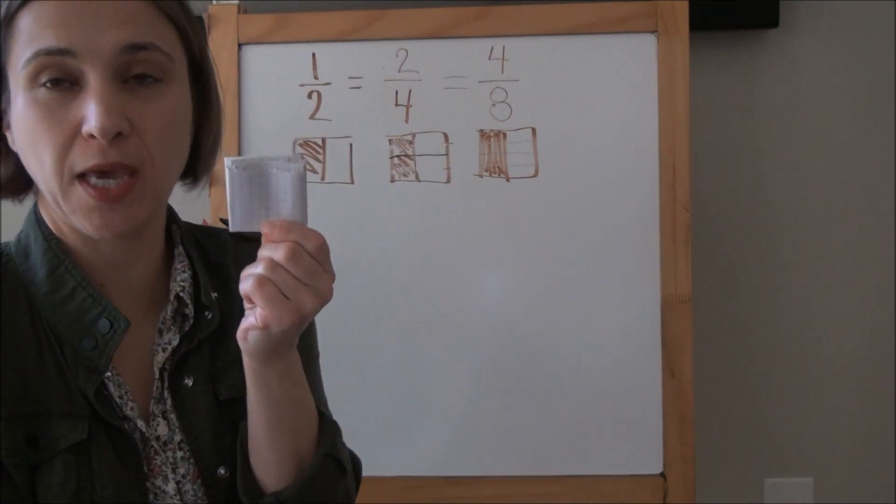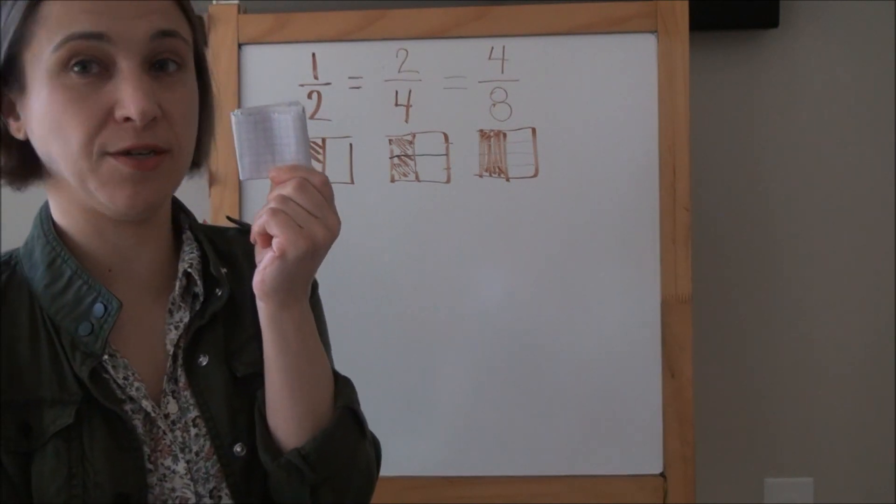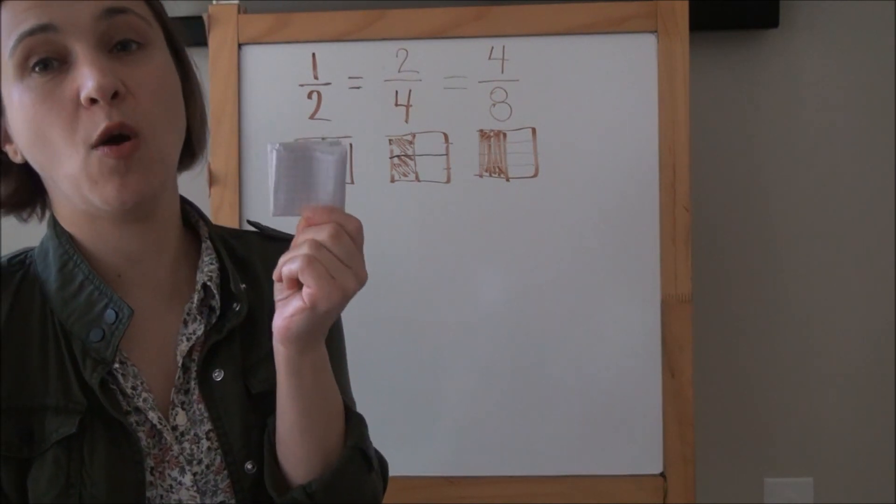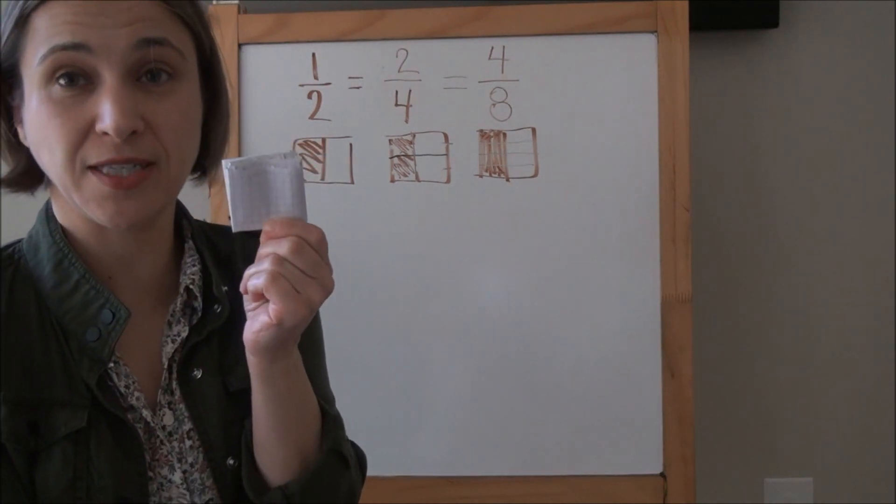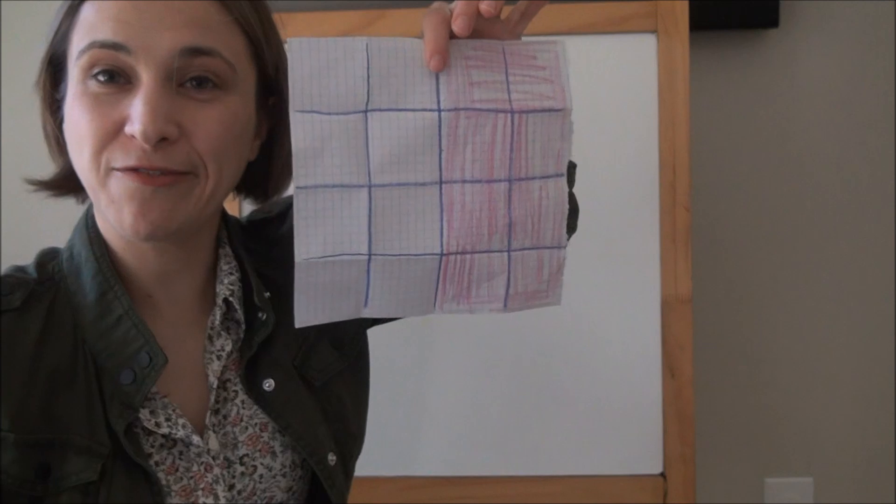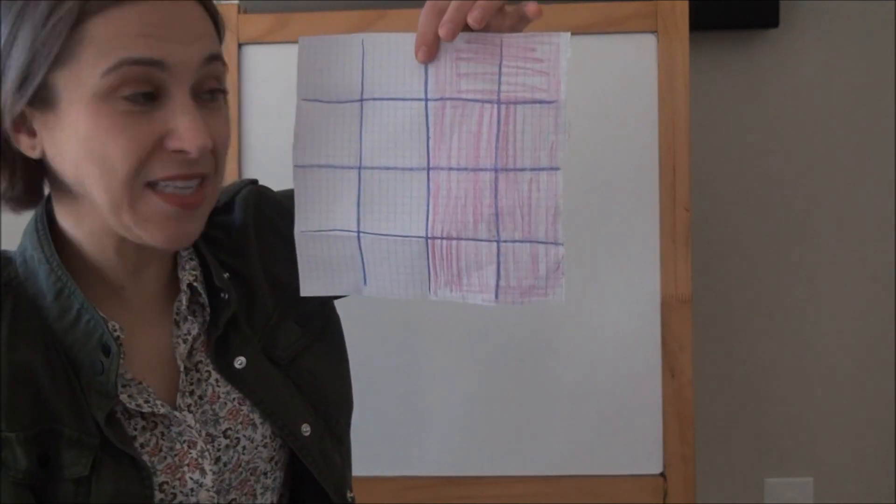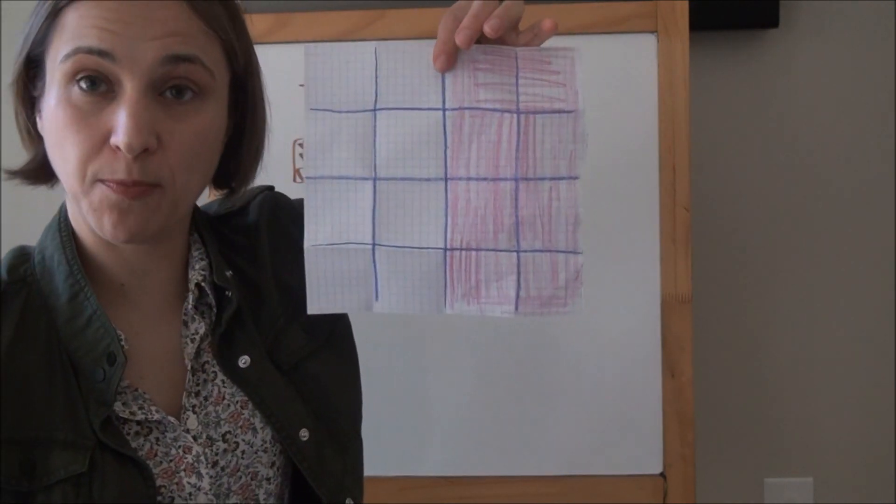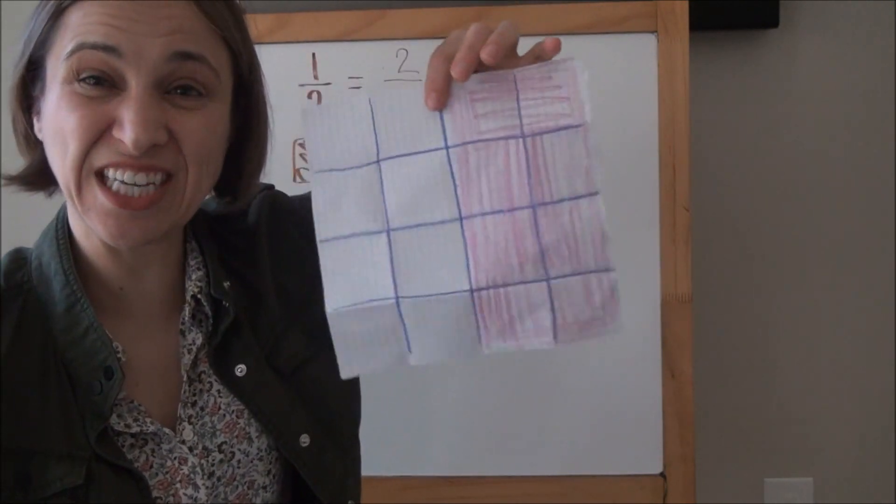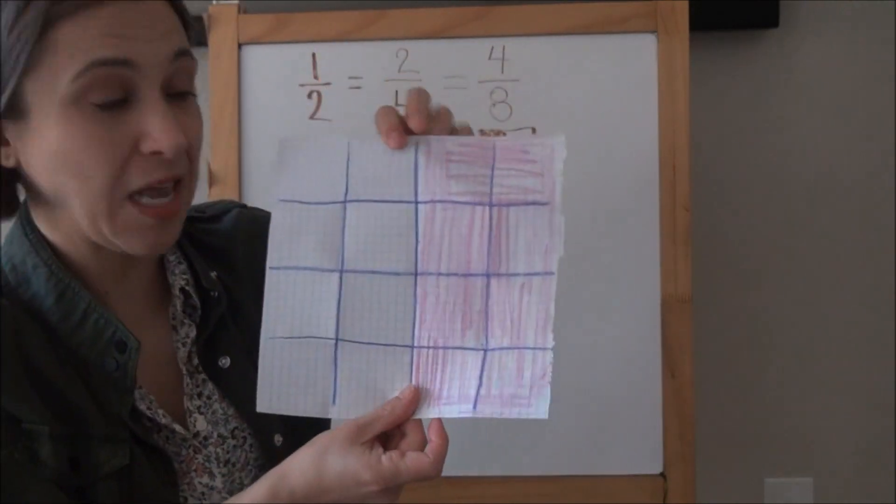You're not coloring anything extra. You're not taking anything away. The only thing that changed is the number of folds or the number of parts on your paper. All right, so how many of you said that eight-sixteenths of your paper is shaded? Eight-sixteenths of your paper.